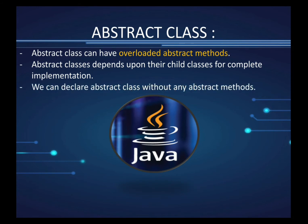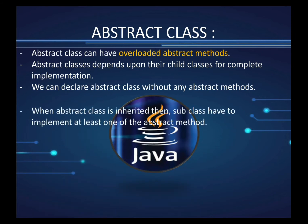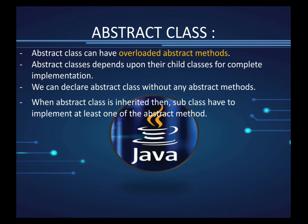You can declare an abstract class without any abstract methods by using the abstract keyword in front of the class name. However, when an abstract class is inherited, the subclass must implement at least one of the abstract methods — it is compulsory.